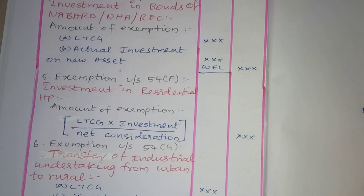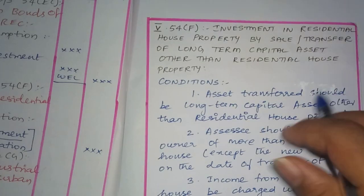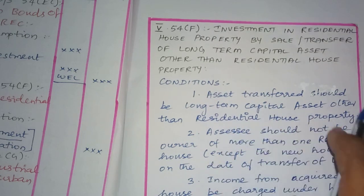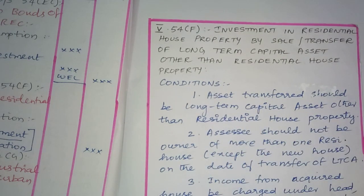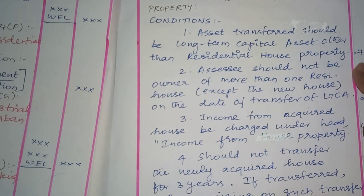Under Section 54F, if you have a long term capital asset and you sell it and invest in a residential house property, the exemption applies. However, if you already own one or more additional house properties, this section will not apply. That is why income from house property is taxed separately.